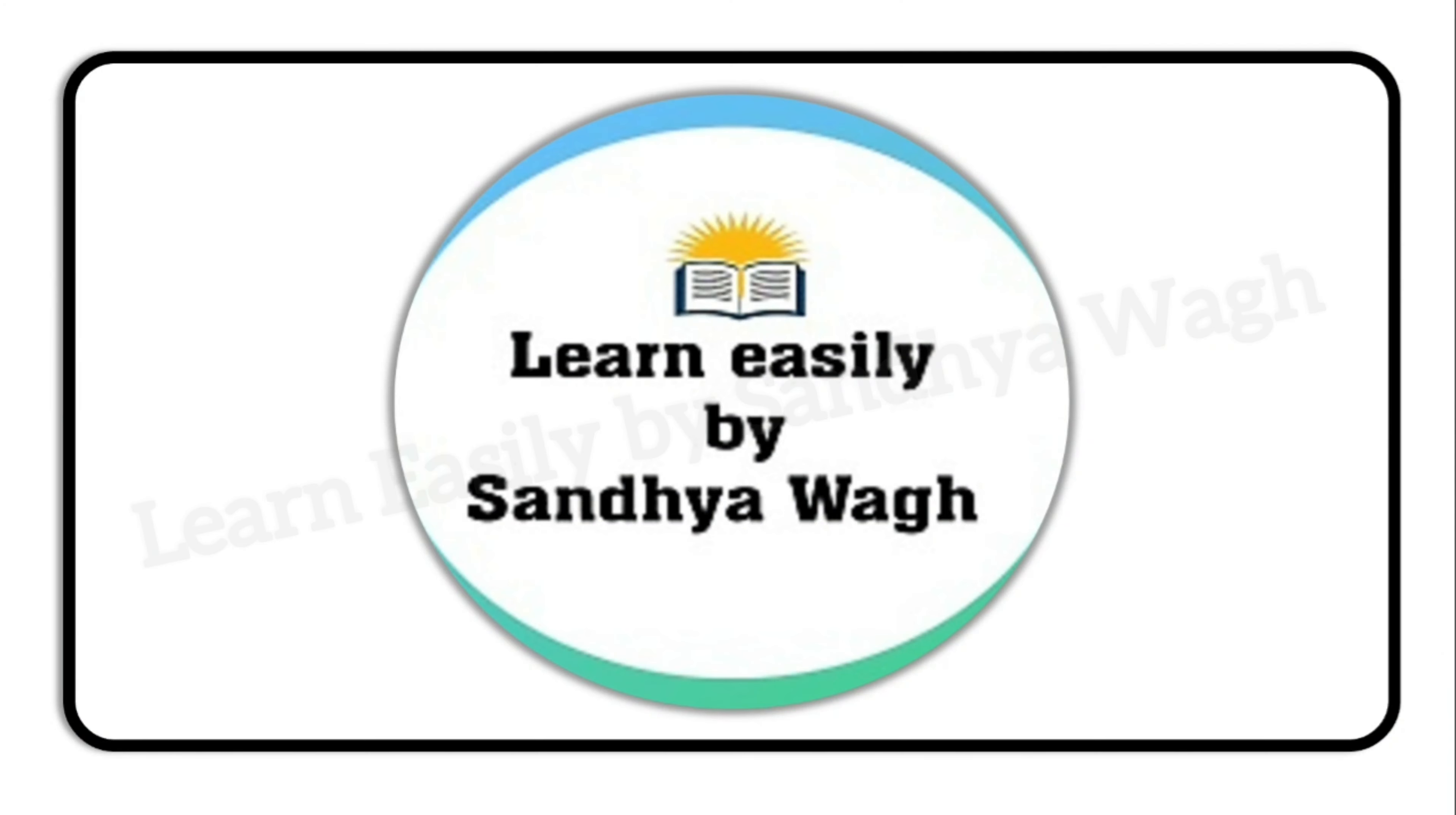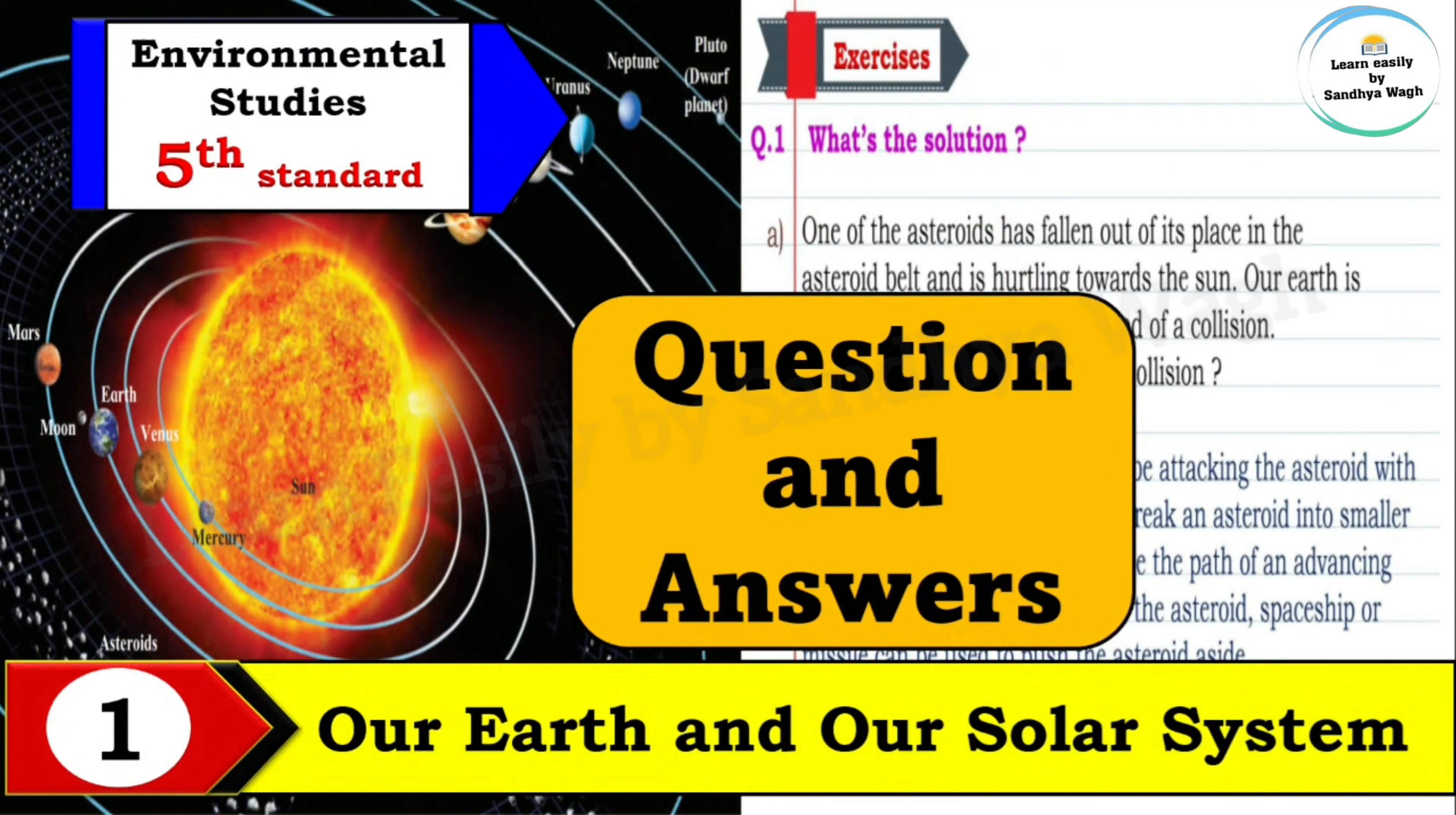Hello dear students, today we are going to learn and understand the question and answers of lesson number one: Our Earth and Our Solar System, from Environmental Studies textbook standard 5. We have studied this lesson in a very interesting way. Do watch that video to understand this lesson better - link is given in the description box below. Now let's understand its question and answers.